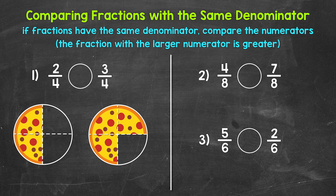Let's jump into number one, where we have two-fourths and three-fourths. Reading this comparison from left to right, we have: two-fourths is greater than, less than, or equal to three-fourths. Which fraction is greater? If fractions have the same denominator, all we have to do is compare the numerators — the top numbers. The fraction with the larger numerator is greater.